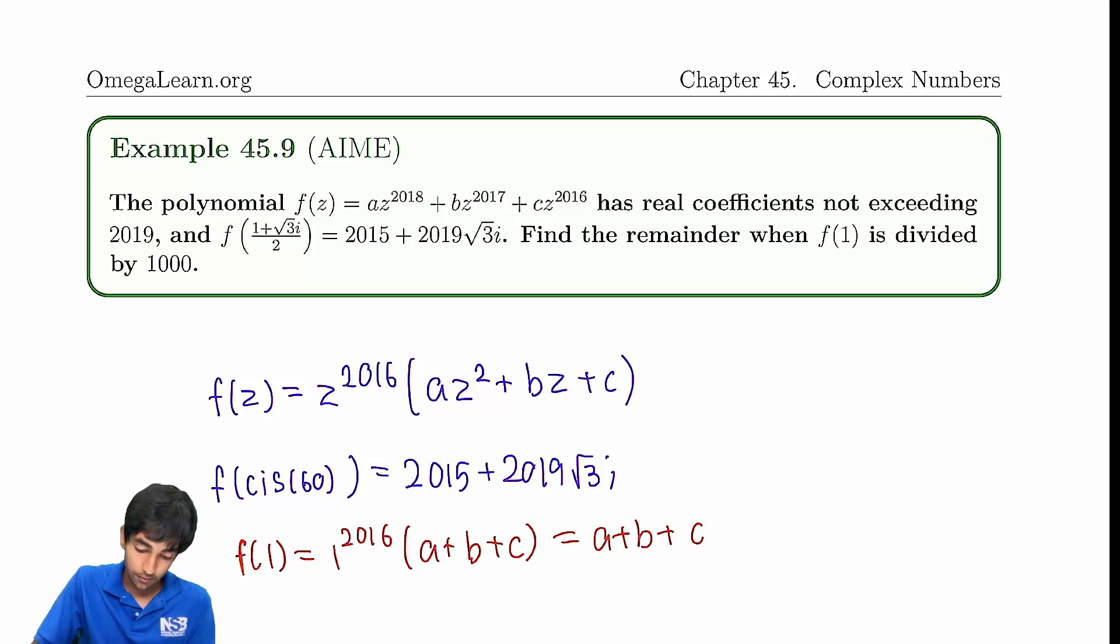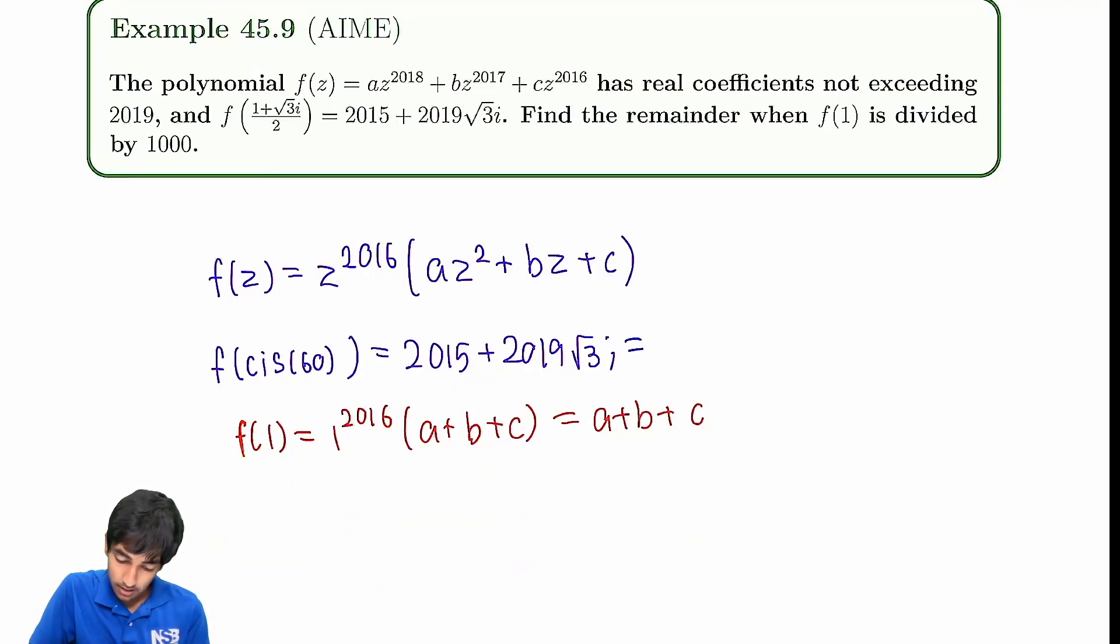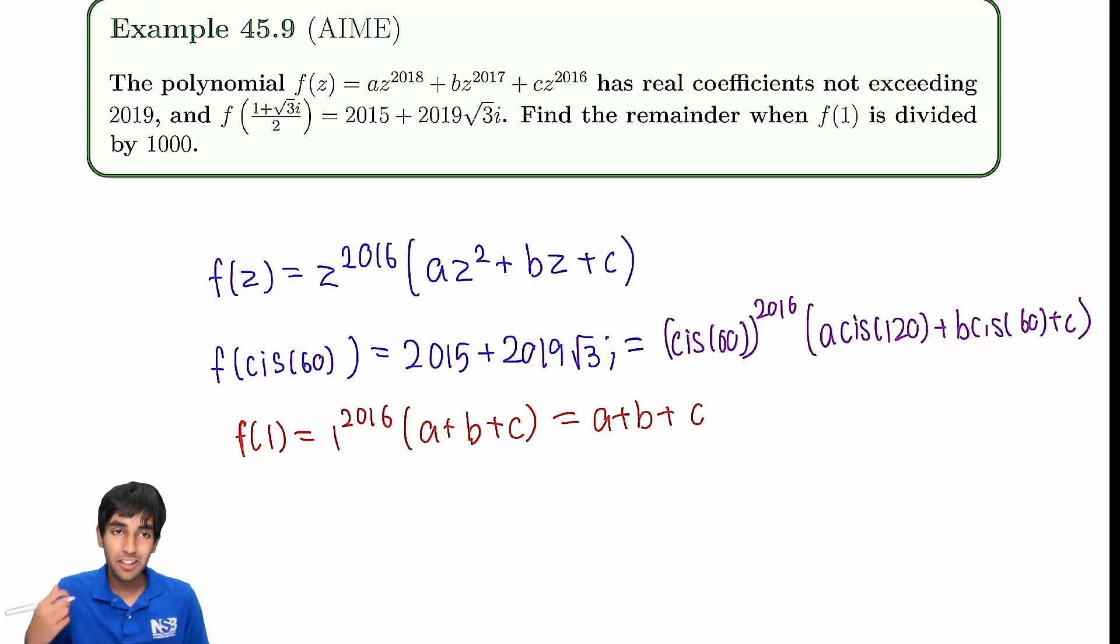We really are just trying to find a plus b plus c here. And we need to somehow use this information. So now naturally, let's just write what this actually is in terms of our f of z, right? So we have z to the 2016, which is, well, let's write cis 60. So cis 60 to the 2016 times, a times cis of 60 squared, so cis 120, plus b, cis 120, or plus cis 60, plus c. But take a look. This is just 1, because 2016 is a multiple of 6. We can just make all of that equal to 1. And now we're just left with this.